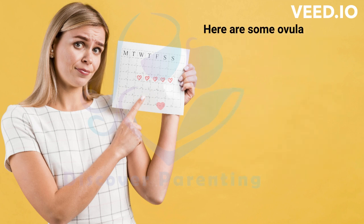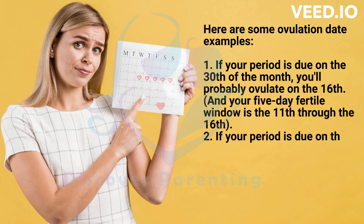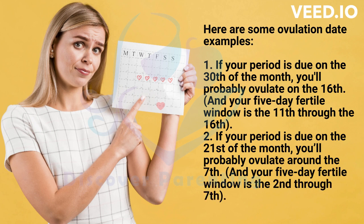Here are some ovulation date examples. If your period is due on the 30th of the month, you'll probably ovulate on the 16th, and your 5-day fertile window is the 11th through the 16th. If your period is due on the 21st of the month, you'll probably ovulate around the 7th, and your 5-day fertile window is the 2nd through the 7th.